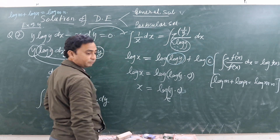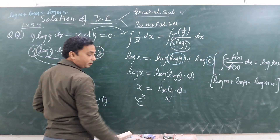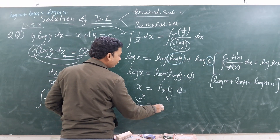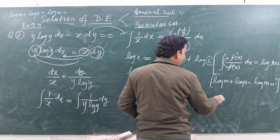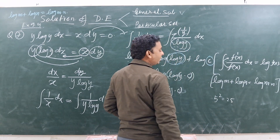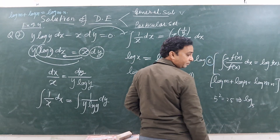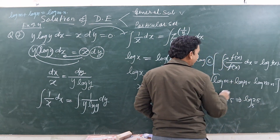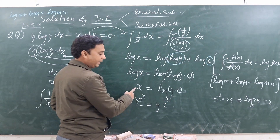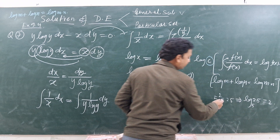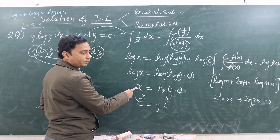The base here is E. So E to the power (xC) = log y · C. Recall: if 5 to the power 2 = 25, then log base 5 of 25 = 2. Similarly, E to the power X = log y means the base E raised to power X equals the argument. So log y = E^(xC).